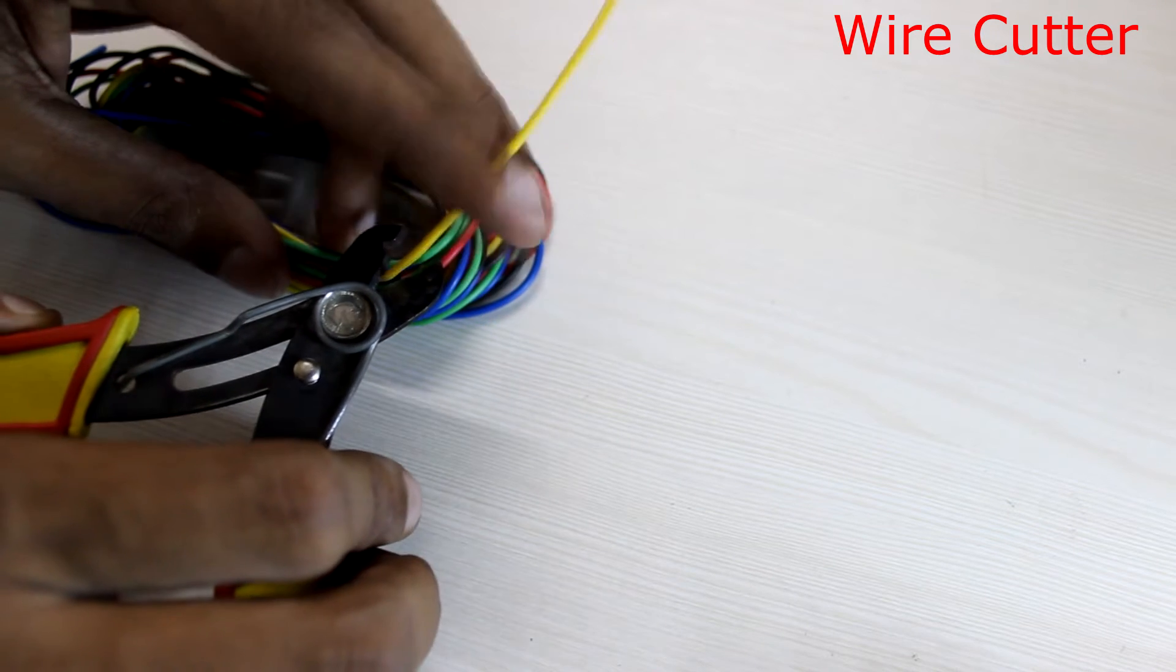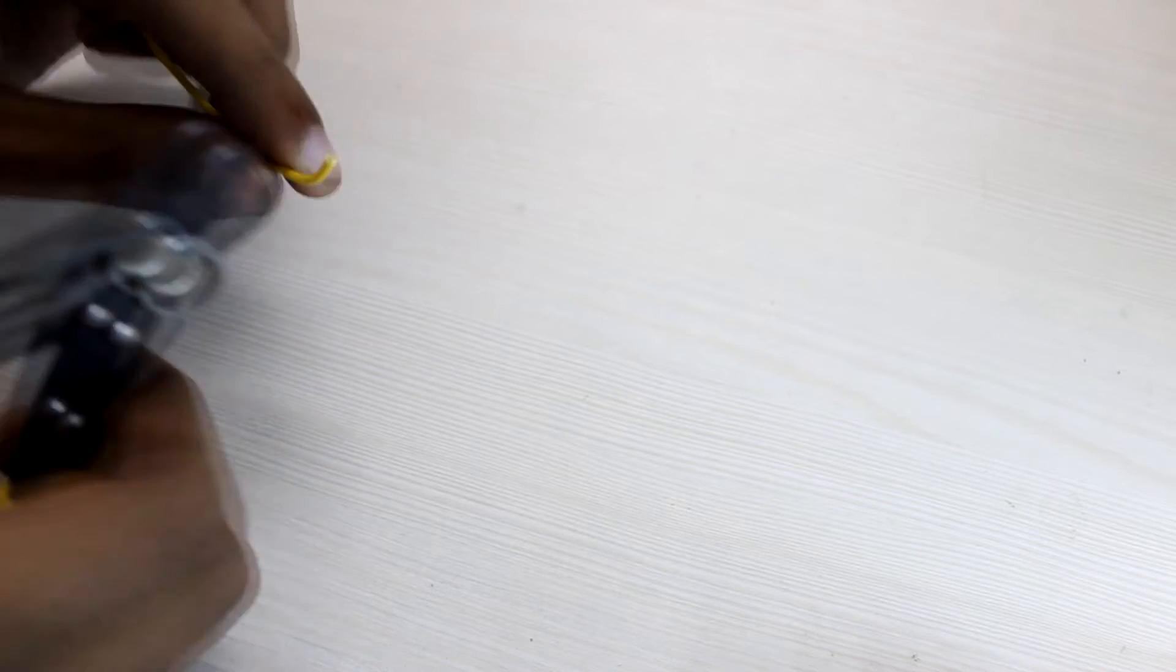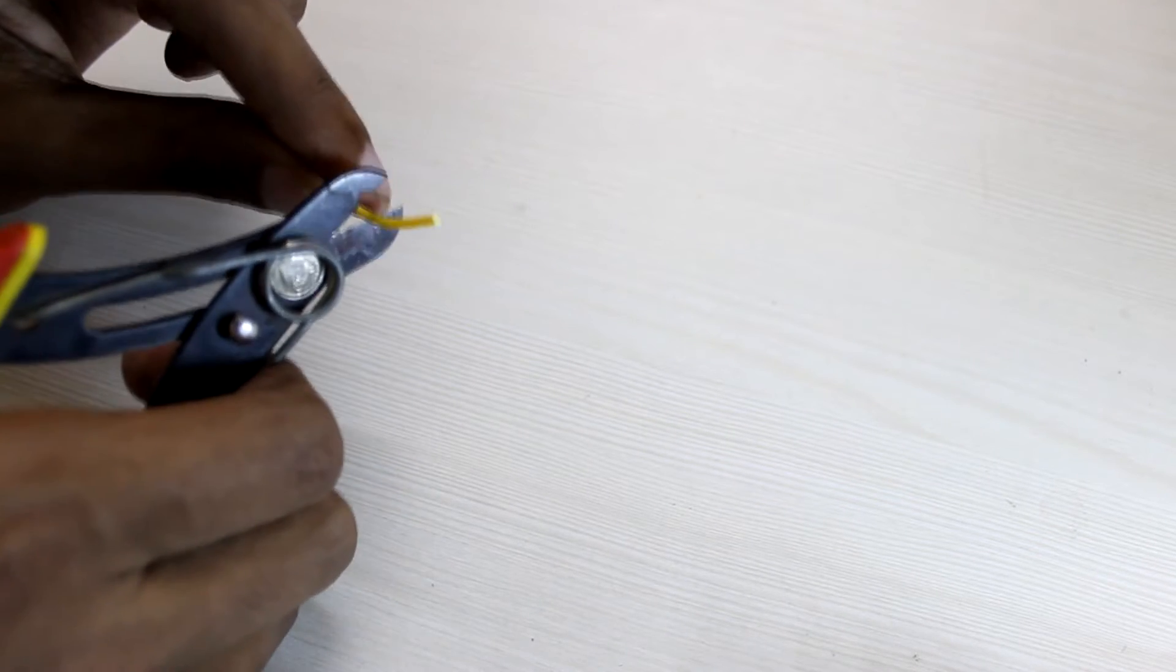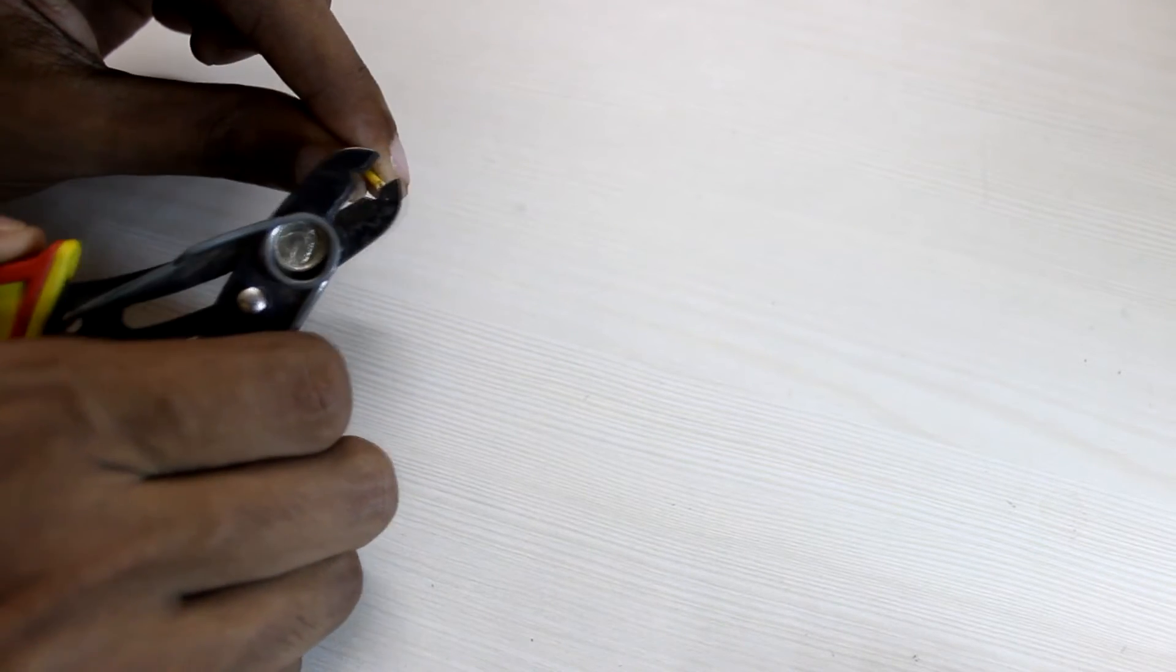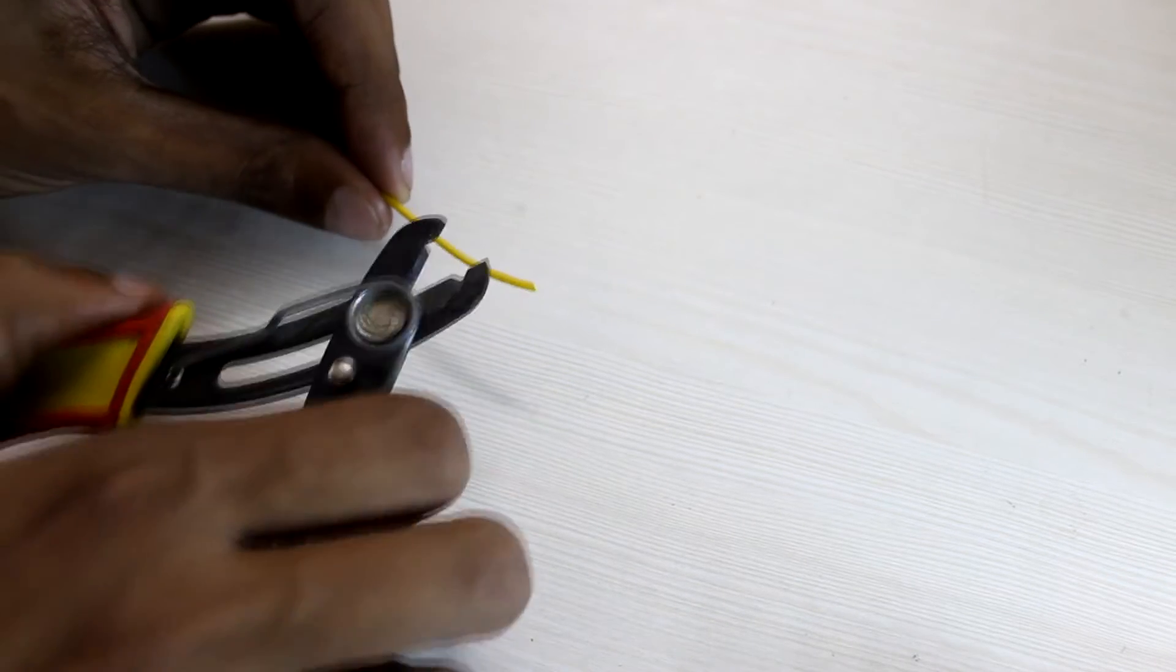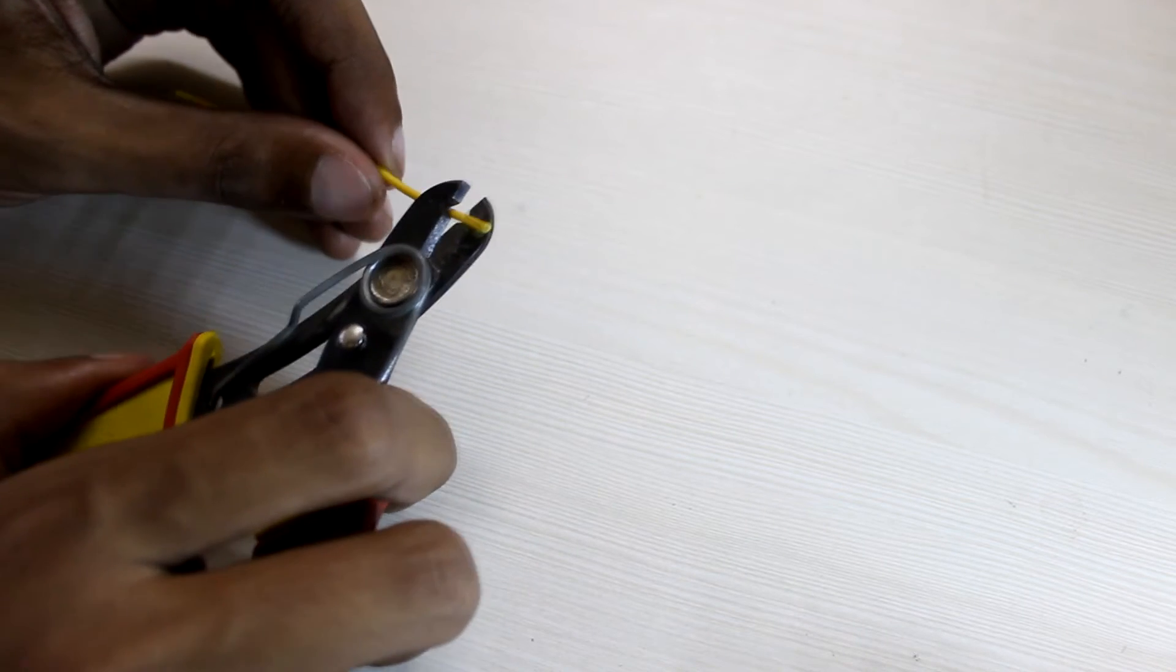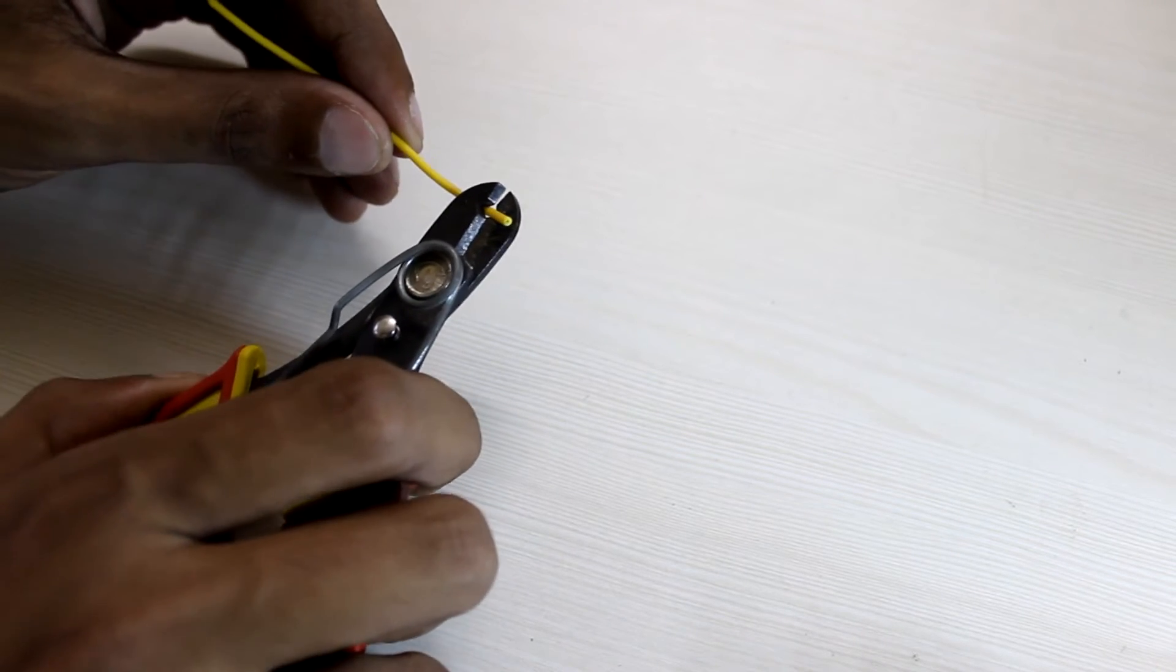You can cut the wires by using the flat region of this cutter like this. And you can strip the insulation away by placing the wire on the curved region, holding it horizontally and click. Now you can take off the insulation easily.